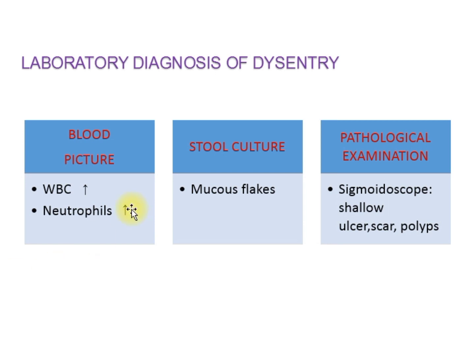Although clinical diagnosis of dysentery is clear when there is mucus and blood, a laboratory diagnosis is sometimes required. Lab diagnosis can be based on the blood picture, stool culture, and pathological examination. In severe cases, the blood picture shows increased WBC and increased neutrophils. Pathological examination can be done by sigmoidoscope, in which shallow ulcer scars and polyps can be observed.